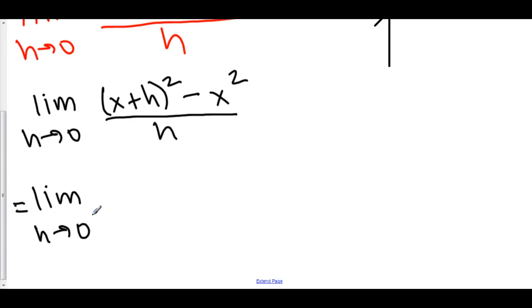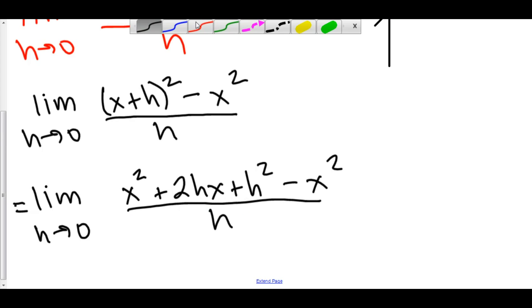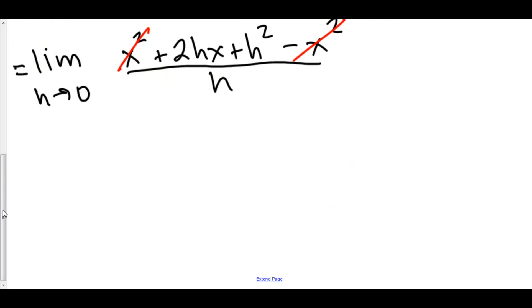So, here we have the limit as h approaches 0 of x squared plus 2hx plus h squared. We've got the minus x squared, and this is all over h. Well, x squared minus x squared, that cancels out. And take a look at this. I've got 2hx plus h squared in my numerator. I can factor out an h.